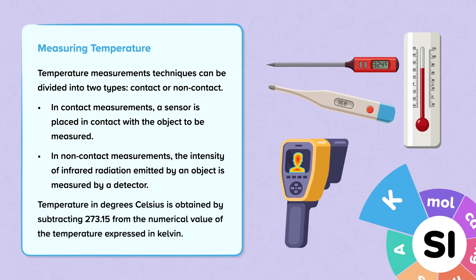Temperature in degrees Celsius is obtained by subtracting 273.15 from the numerical value of the temperature expressed in Kelvin.